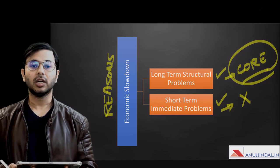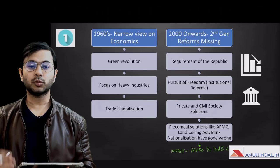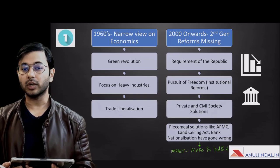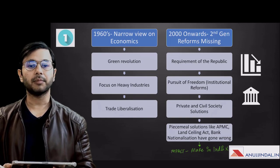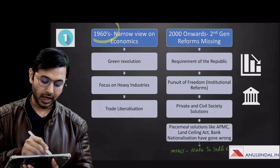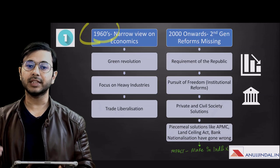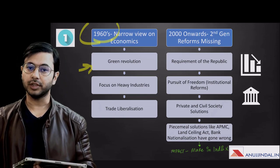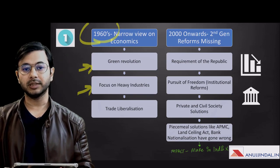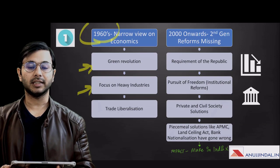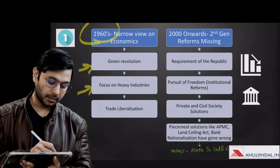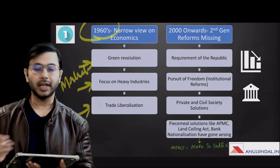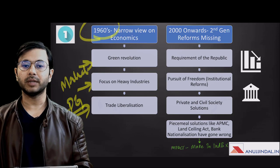The first long-term structural reason is institutional reforms. In the 1960s, India had a narrow view on economics — we wanted to develop agriculture, and the solution was the Green Revolution. We also focused on heavy industries via the Mahalanobis model in the Industrial Policy Resolution of 1956. The third was trade liberalization — the LPG reforms — adopted by India in 1991. All these methods were narrow in their focus on immediate conversion of resources into money.